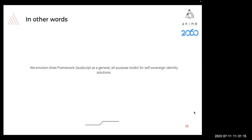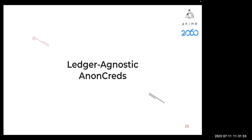In other words, we envision Aries Framework JavaScript as an all-purpose decentralized identity toolkit - a framework that can act as a bridge between different identity ecosystem islands, which is really valuable.